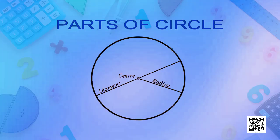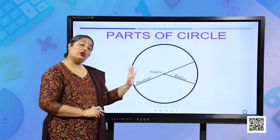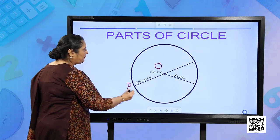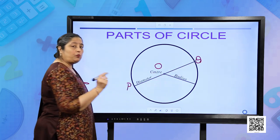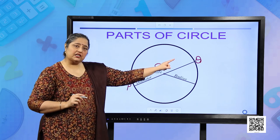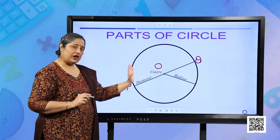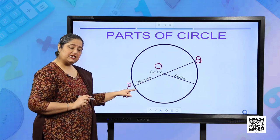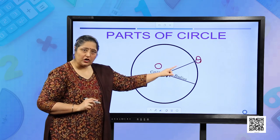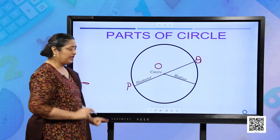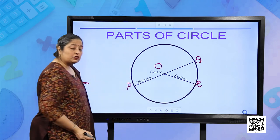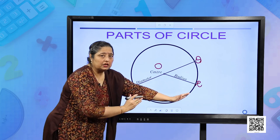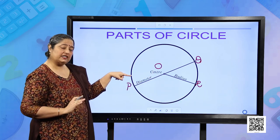Let us move forward. These are the parts of the circle we have already studied. O is the center of the circle. Let me mark two points P and Q on the circle. The diameter is PQ — a line segment joining the end points of the circle and passing through the center O. The radius is OR — the fixed distance from the center to the circle.